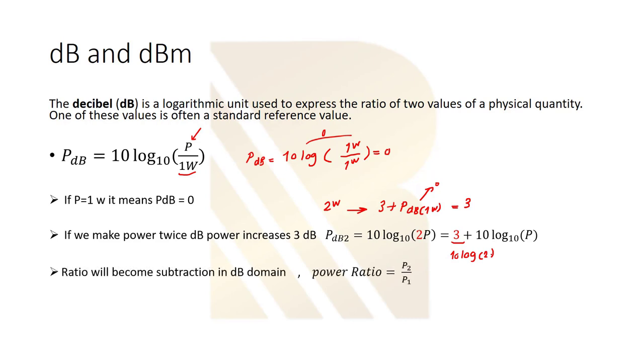Our feature is ratio will become subtraction in dB domain. So power ratio is equal to P2 over P1. Imagine that we have 2 watt for P2 and 1 watt for P1. So the ratio will become 2. And now we can say the ratio is 10 log, and it will become 10 log P2 minus 10 log P1.